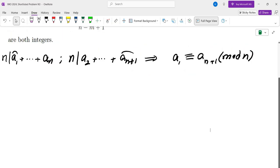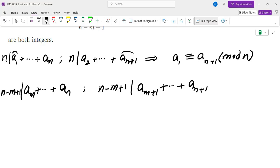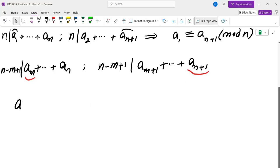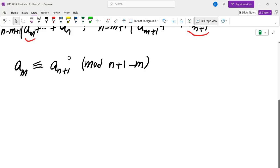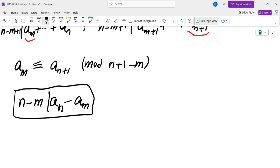It means A1 and AN plus 1 would have to be the same mod N. So I can repeat the same thing for any number of consecutive terms of this sequence. If I look at AM all the way to AN, this is divisible by N minus M plus 1. And if I look at AM plus 1 all the way to AN plus 1, those two would have to be the same mod N plus 1 minus M. In other words, we can say that for every two indices, the difference of the indices is going to divide AN minus AM.